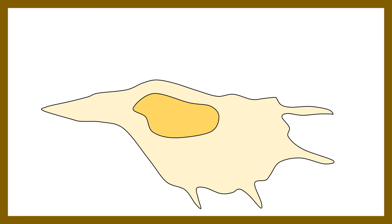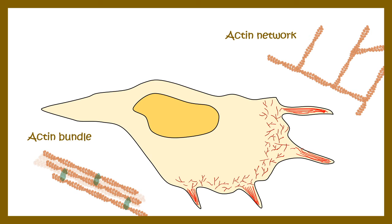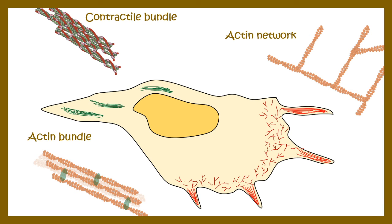Actin does not always have to be in a bundle format. Actin can be in a branched format known as an actin network, or it can be found as actin bundles. There can also be contractile actin bundles found in a migrating cell. All of these different organizations of actin are important for cellular function, especially for cell migration.